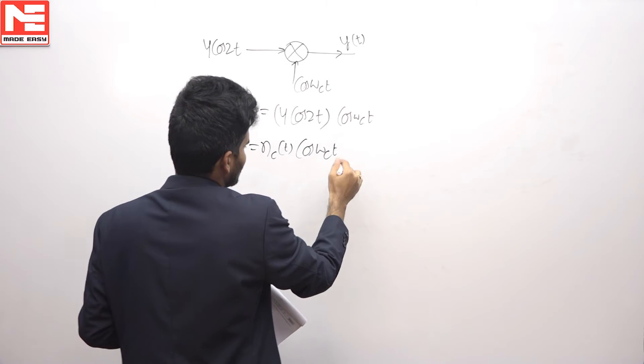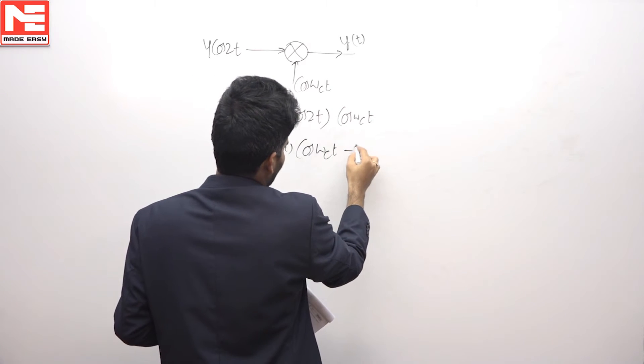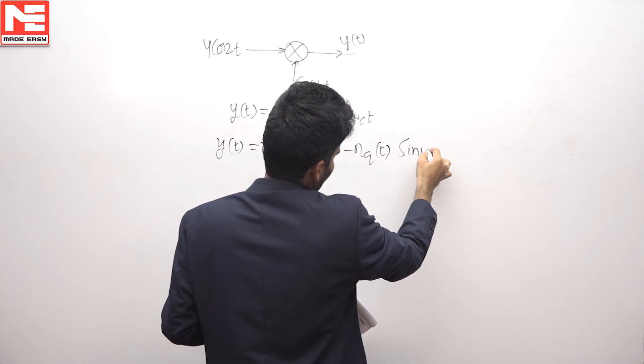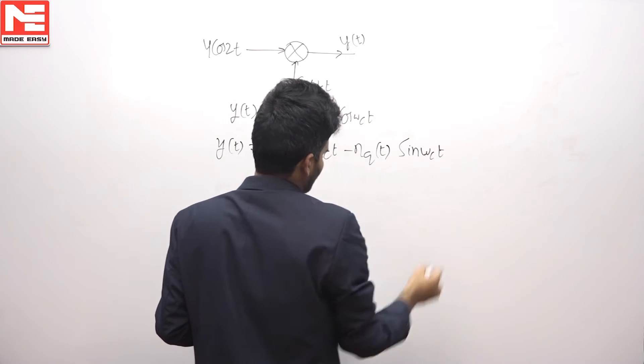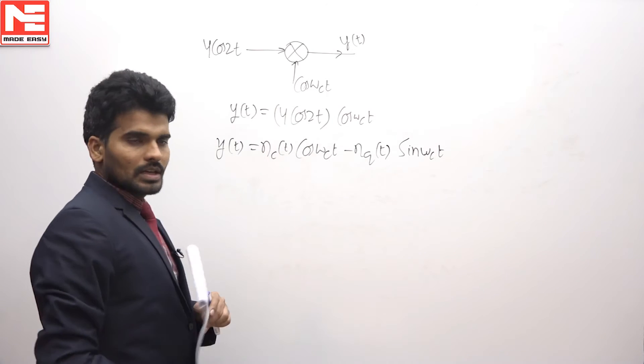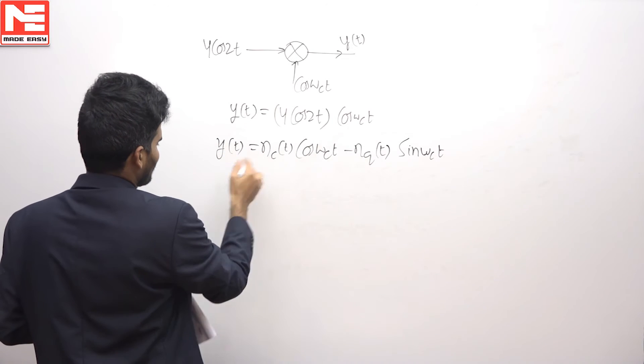cos ωct minus nq(t) sin ωct. If the bandpass signal is in this form, then the complex envelope will be nc(t) + j·nq(t).